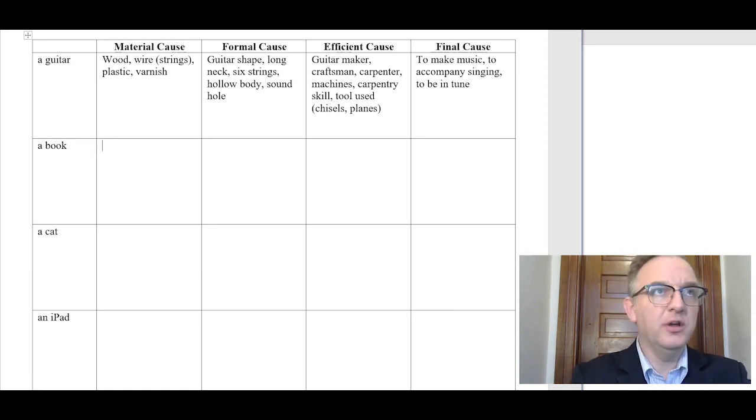Let's try book, second row. Material cause of a book. Paper, ink, glue, binding thread, covers, either cardboard or paper. Maybe a few other things besides, but I think that's most of it.